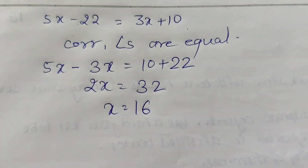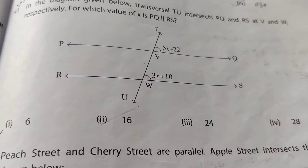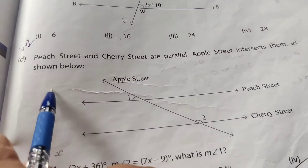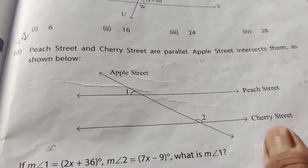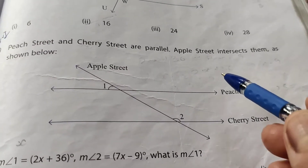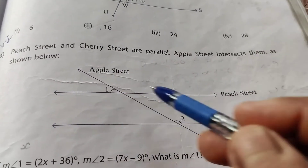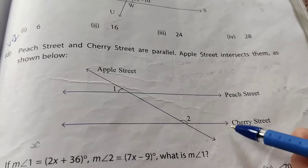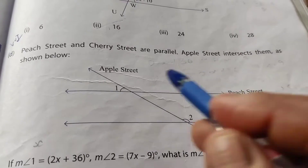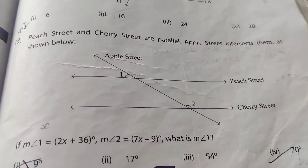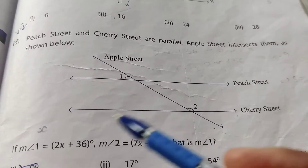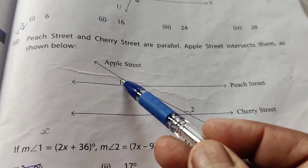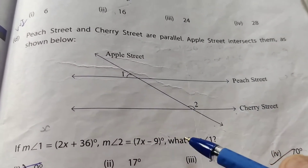The second option, X = 16, is correct. Next question: Peach Street and Cherry Street are parallel, and Apple Street intersects them as a transversal. Angle 1 = 2X + 36°, and angle 2 = 7X − 9°. What is the measurement of angle 1?